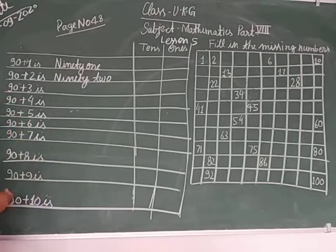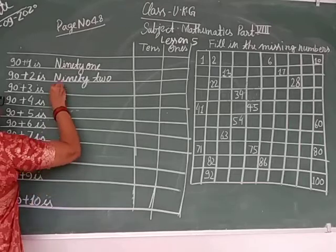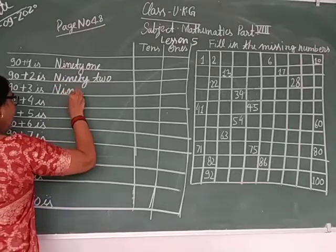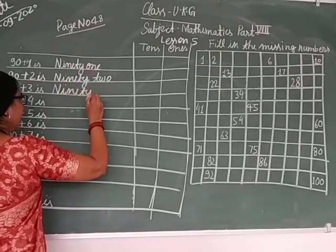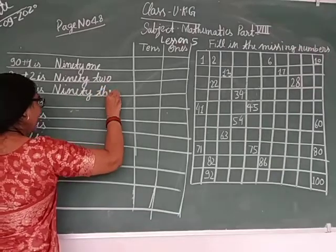90 plus 3 is 93. It's calling it as ninety, N-I-N-E-T-Y, ninety, T-H-R-E-E.